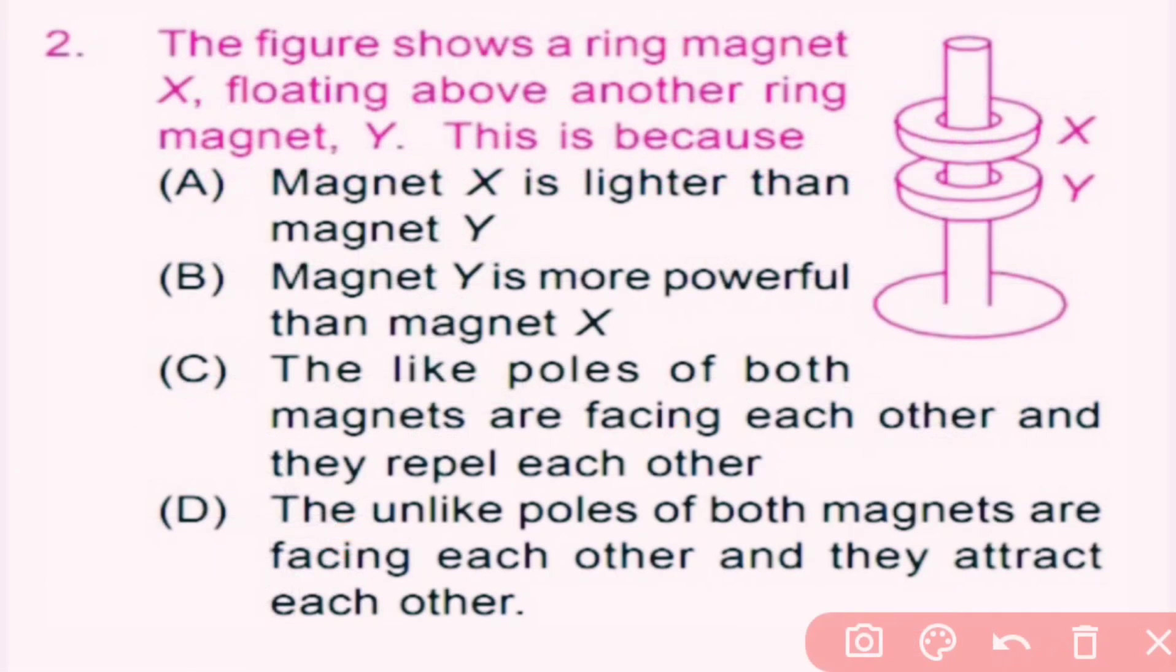Question number 2. The figure shows a ring magnet X floating above another ring magnet Y. This is because: option A, magnet X is lighter than magnet Y; option B, magnet Y is more powerful than magnet X; option C, the like poles of both magnets are facing each other and they repel each other;